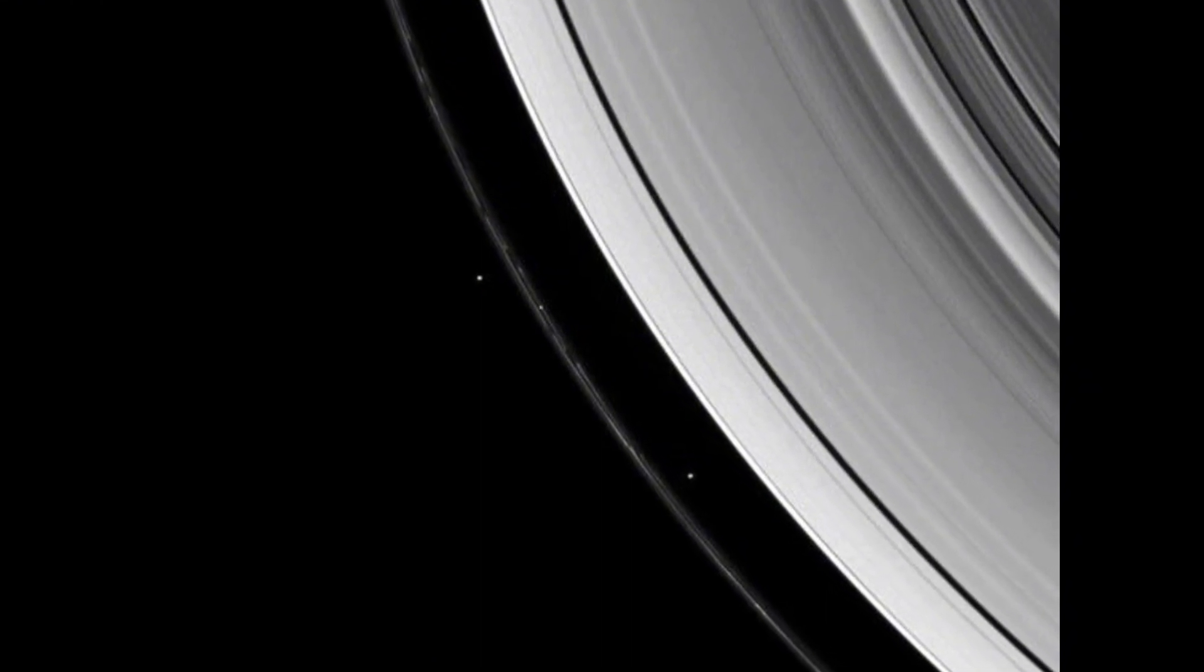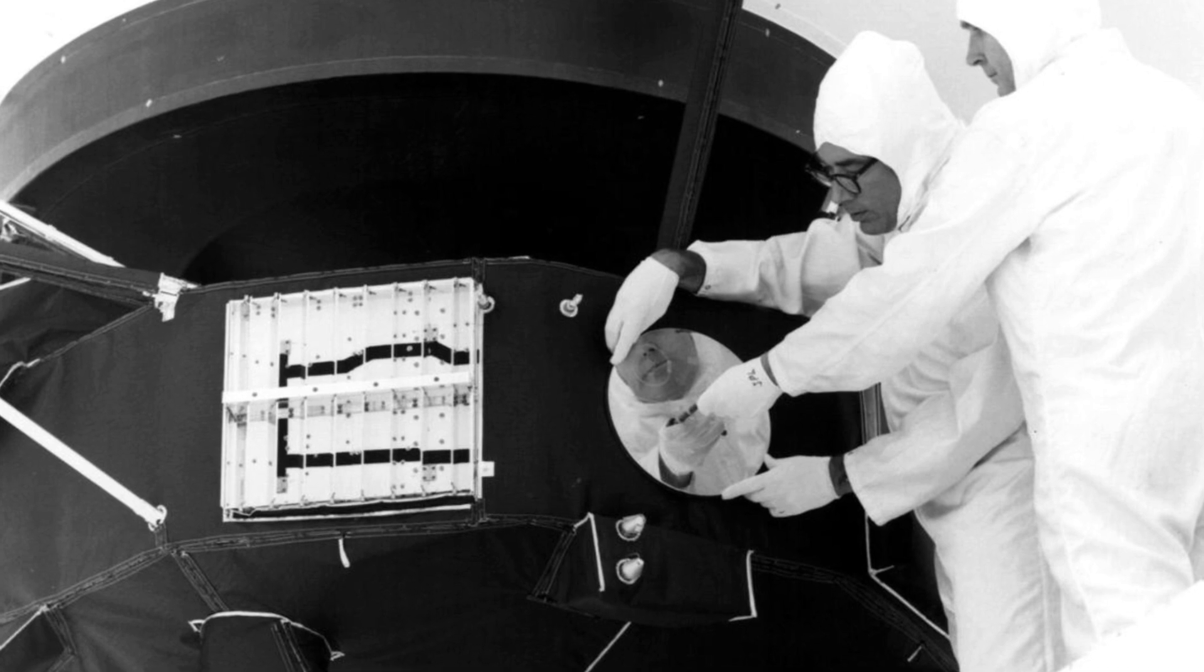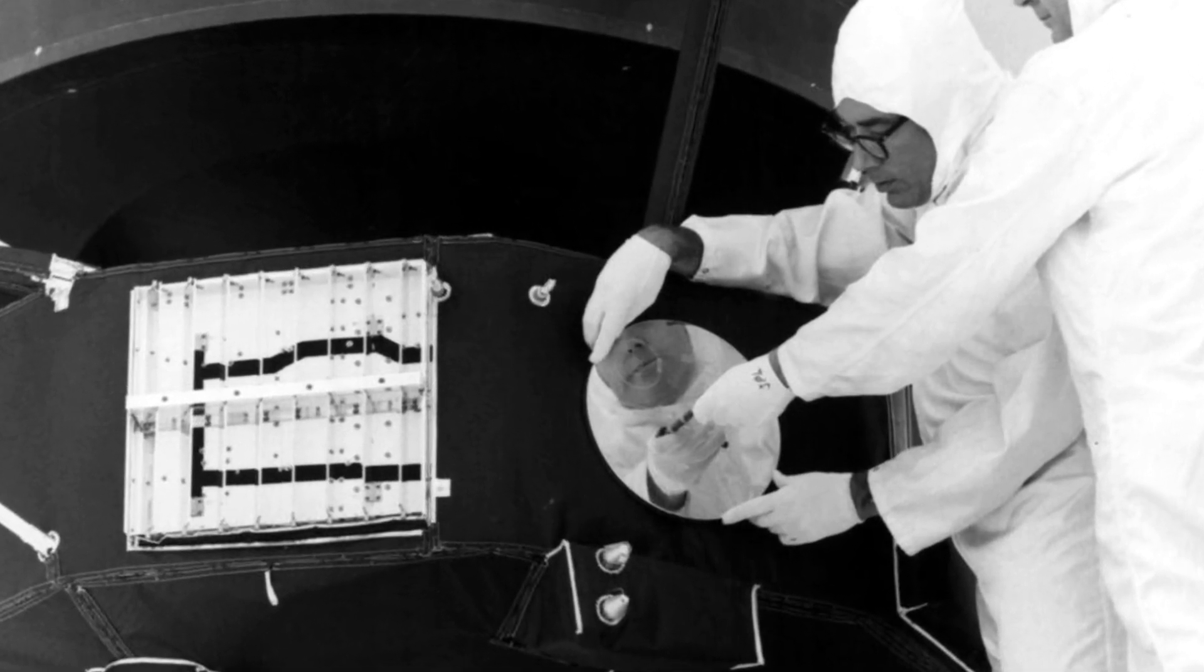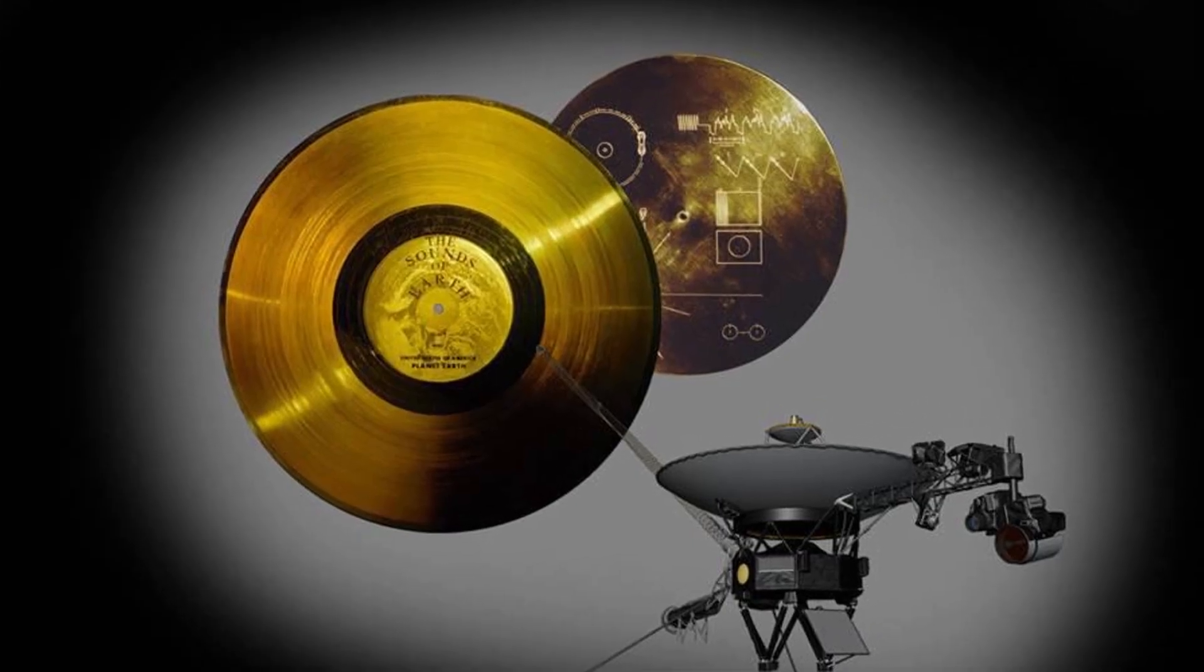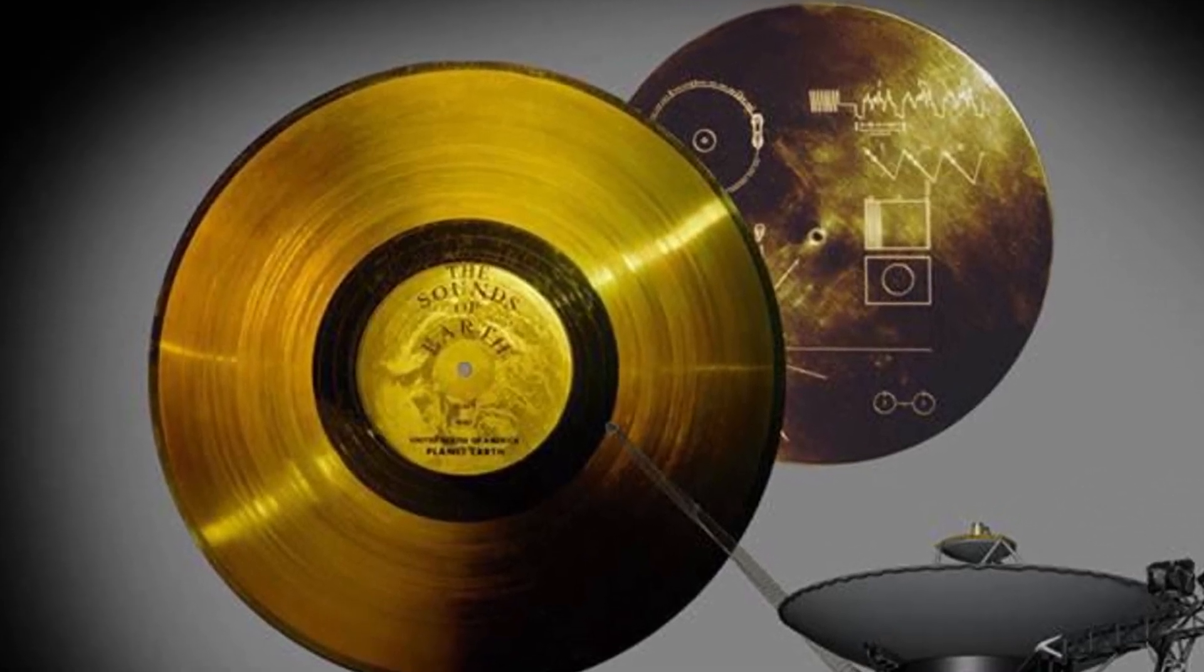The mission wasn't just about taking pretty pictures. Voyager 1 was equipped with an array of sophisticated scientific instruments designed to study planetary atmospheres, magnetic fields, radiation environments, and surface compositions. Its golden record was a time capsule of human culture and a symbol of our species' curiosity and hope.